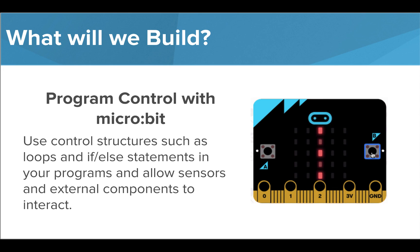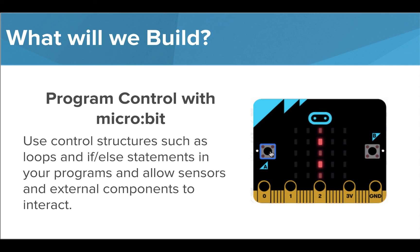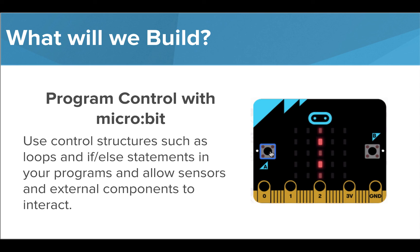In the program control module, we'll learn how to apply control structures, such as if-else statements and loops, to create programs that will react to the outside world. We'll build programs that use the built-in sensors that detect temperature, light, and acceleration, as well as external sensors, such as an ultrasonic rangefinder, which detects the distance from your device to nearby objects.